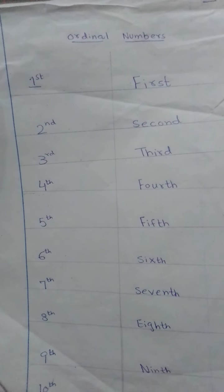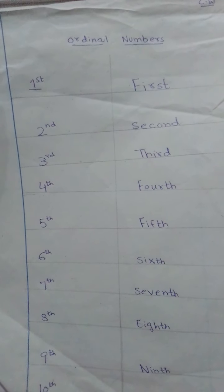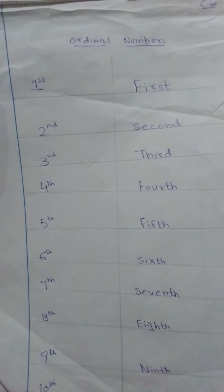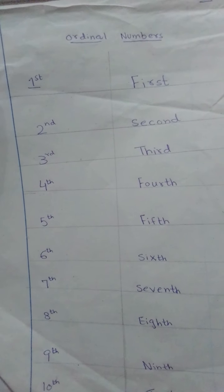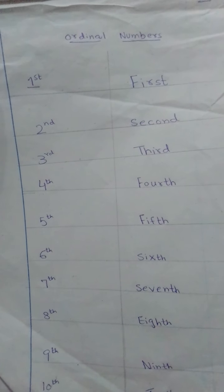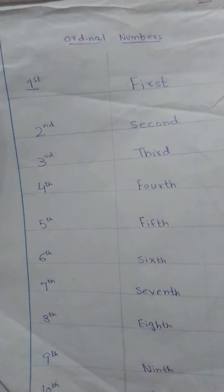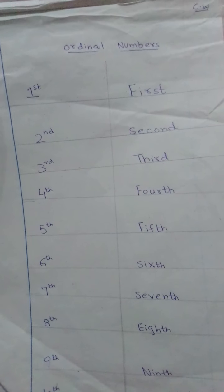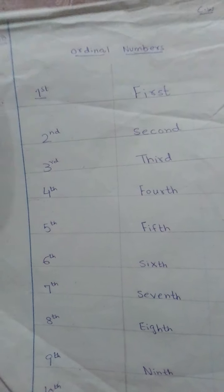What is the spelling of 7th? S-E-V-E-N-T-H, seventh. What is the spelling of 8th? E-I-G-H-T-H, eighth. What is the spelling of 9th? N-I-N-T-H, ninth.